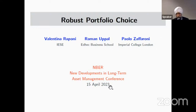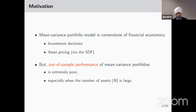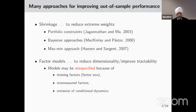The mean-variance portfolio model is the cornerstone of financial economics — not just for investment decisions and asset pricing decisions, but for most decisions made in finance where there's a risk-return trade-off. But the performance of this model out of sample is extremely poor, especially when the number of assets is large. There are hundreds of papers which have identified this problem and tried to address it in a variety of ways.